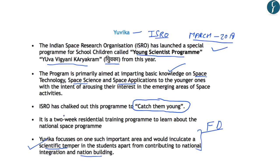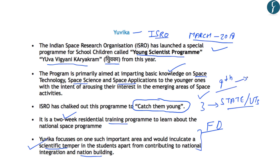YUVIKA is a two-week residential training program to learn about the national space program. Three students each are selected from every state and union territory — those who have just passed the class 9th examination and are about to enter class 10th. Most importantly, it is an initiative of ISRO aimed at inculcating scientific temper in students, which is important from the preliminary examination point of view.